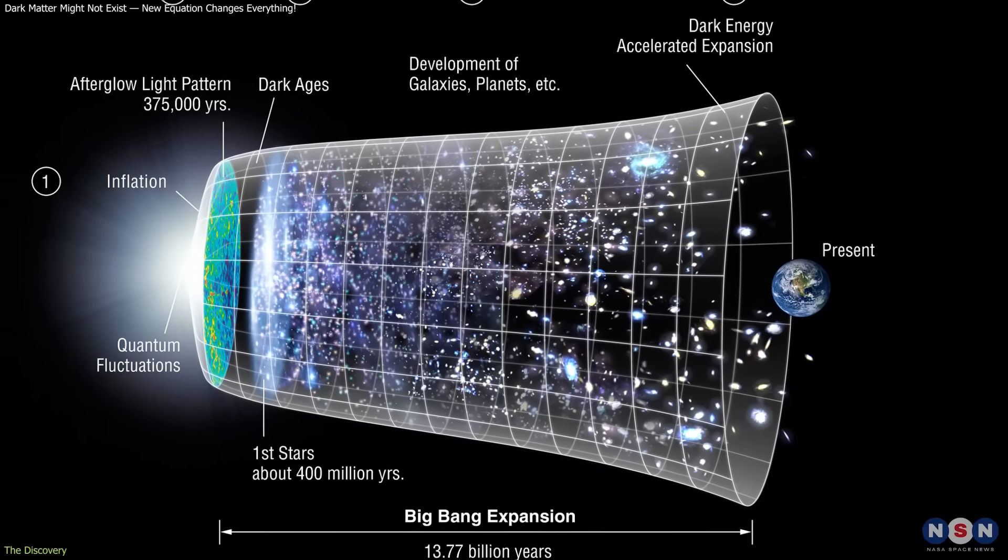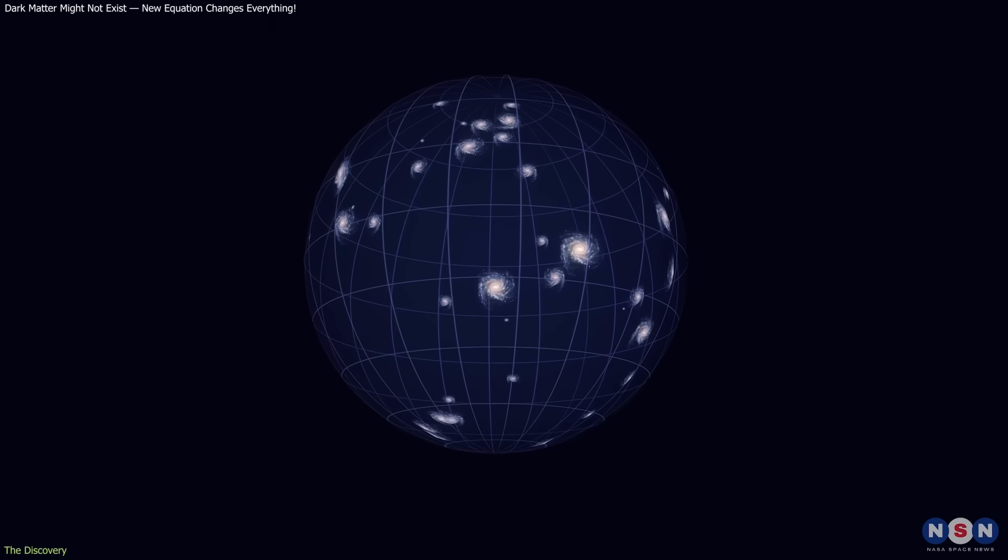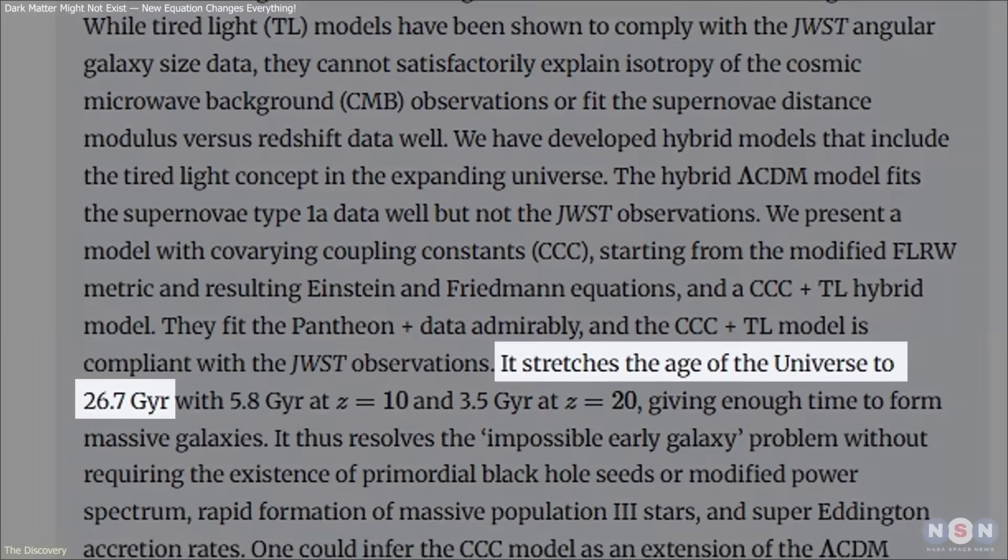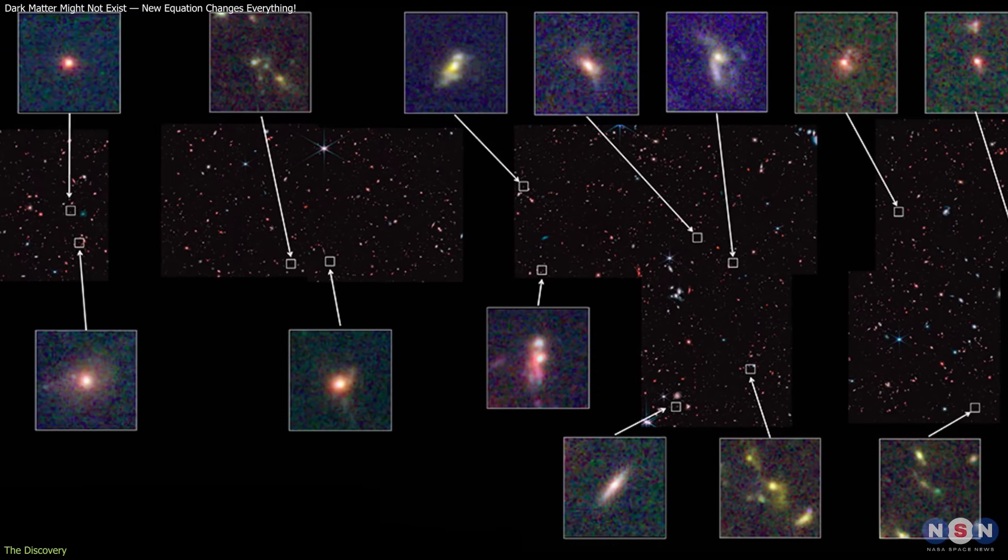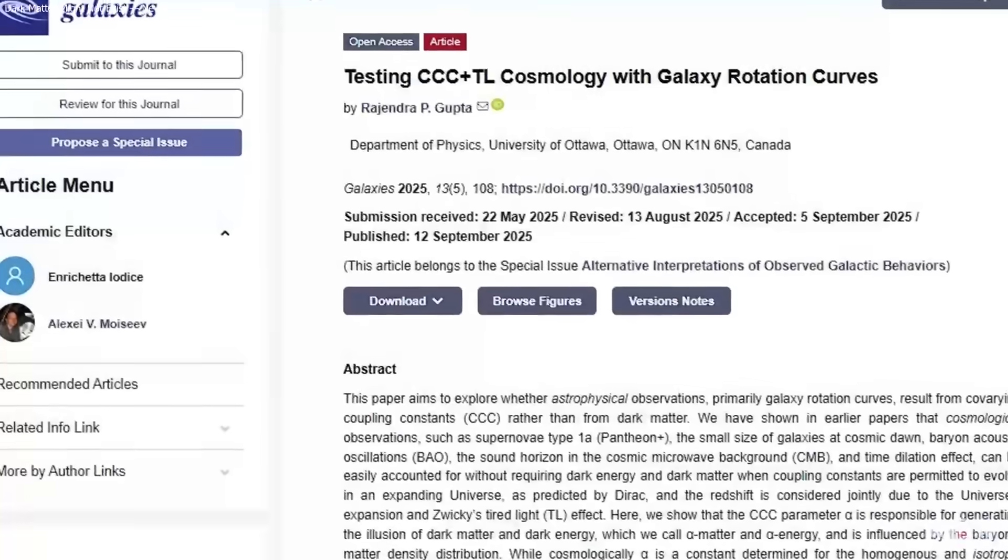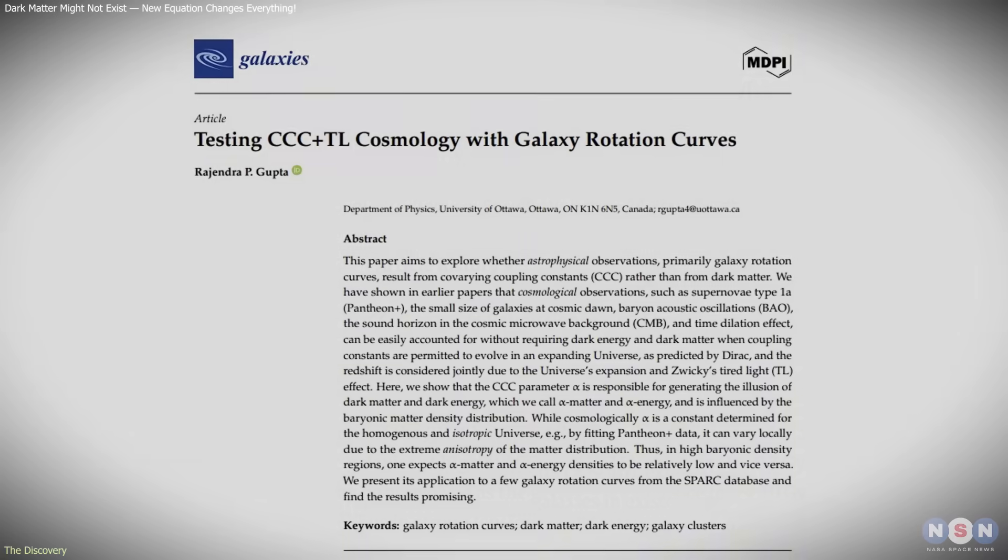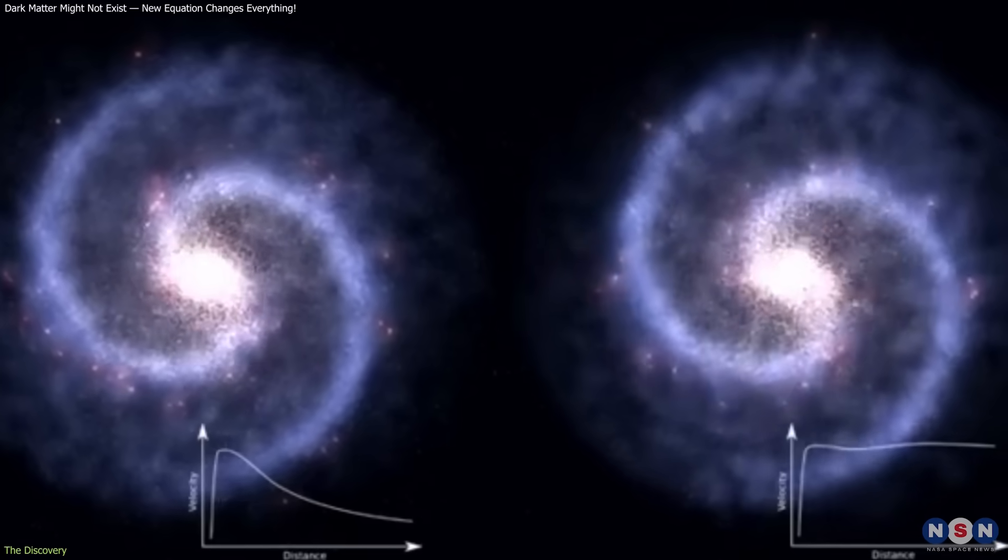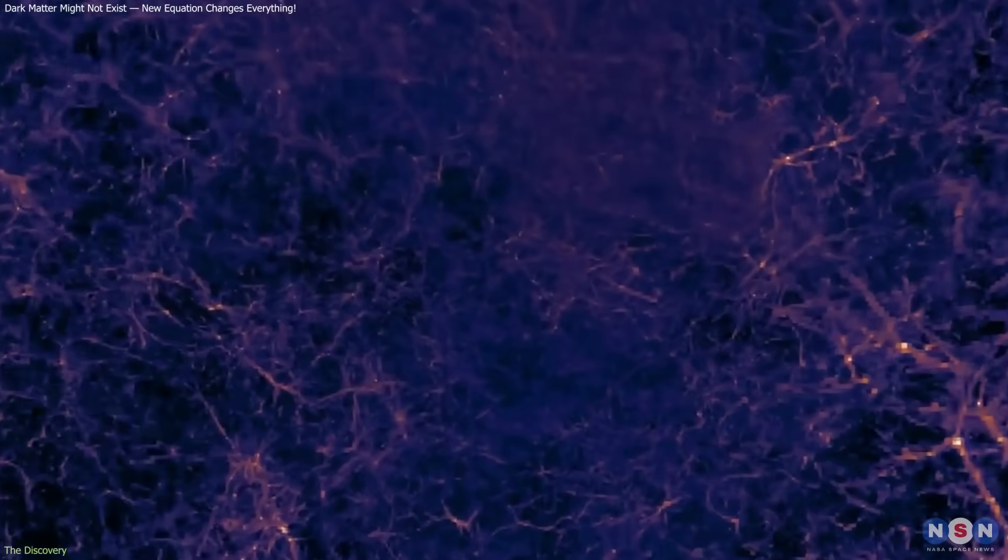An additional outcome of this model is a revised cosmic timeline. If the universe's forces have been changing since the Big Bang, its apparent rate of expansion, and thus its age, must be recalculated. According to Gupta, this adjustment would make the universe nearly twice as old as we currently think, about 26 to 27 billion years. This could solve the puzzle of why massive galaxies and black holes formed so early, within just a few hundred million years of the Big Bang. He concludes that the universe's changing nature, not invisible particles, could explain its most puzzling behaviors.